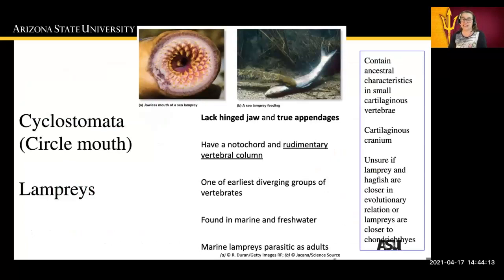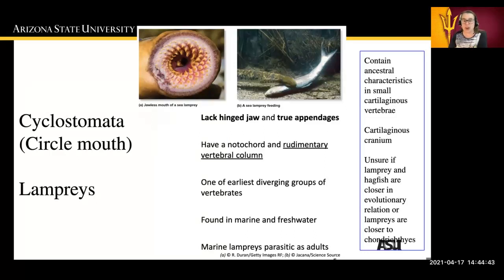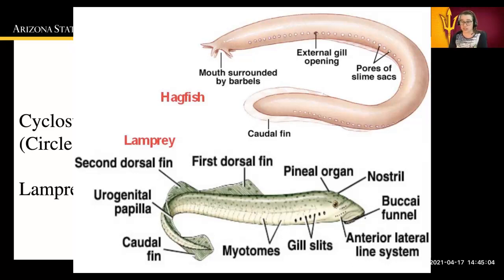The next organism is another Cyclostomata: the lamprey. The lamprey lacks a hinged jaw and any true appendages, but it does have a notochord and a rudimentary vertebral column. It is one of the earliest diverging groups of vertebrates, found in both marine and freshwater. Marine lamprey are often parasitic as adults. Their teeth form a spiraling pattern going down into their mouth, somewhat like the radula of a snail. They have cartilaginous vertebrae and a cartilaginous cranium. It is unclear whether lamprey and hagfish are more closely related, or whether lamprey is actually closer to Chondrichthyes due to all the cartilage they still exhibit.